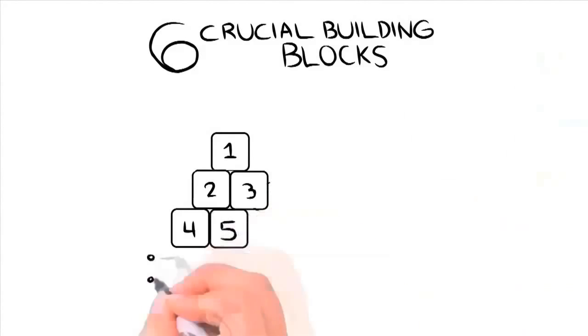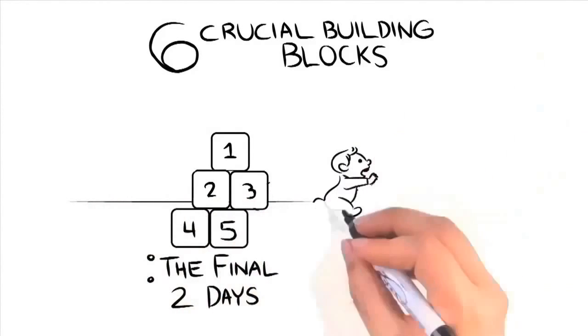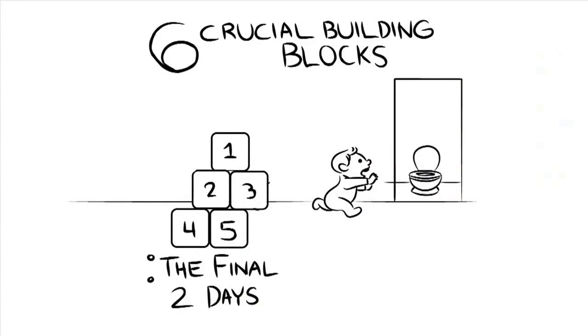Building block number five takes you over the final two days as I give away the mandatory motivational tactics that'll have your child running to the potty on their own each and every time they have to go. Using just two or three of the methods I give to you in this section will make things click in your child's mind halfway through the second day.